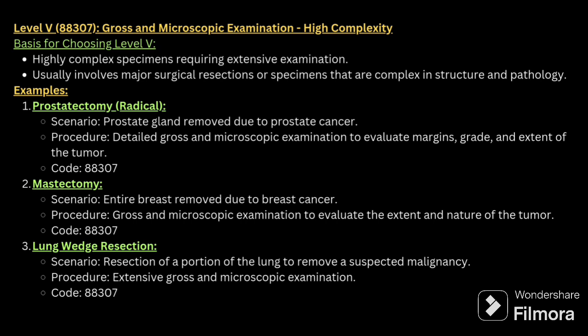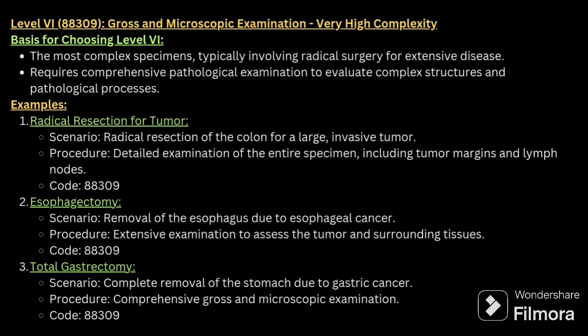Level 5 involves high complexity specimens where extensive examination occurs. It usually involves surgical resection or specimens that are complex in structure — for example, prostate gland removal due to prostate cancer. Level 6 is the most complex, typically involving radical surgery for extensive disease, such as radical resection of a tumor, esophagectomy, or total gastrectomy.